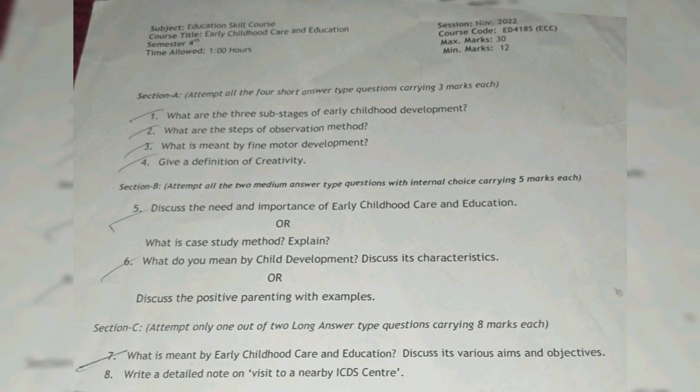Section C — attempt only one out of two long answer type questions carrying 8 marks. 1 into 8 is equal to 8 marks. Question number 7: What is meant by early childhood care and education? Discuss its various aims and objectives.